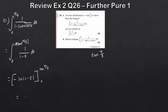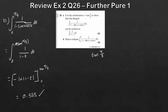Evaluating that gives approximately 0.535 to three decimal places. That's a nice result. Sometimes the answer can be more complicated and you'll need to use partial fractions to obtain the final solution - which is exactly what the next question demonstrates.